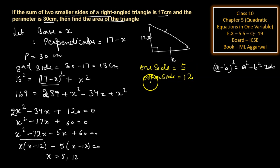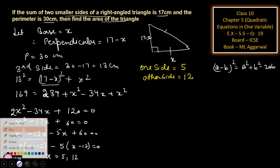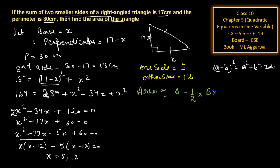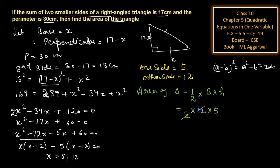Now we need to find the area of the triangle. Area of triangle equals half into base into height. The two legs are 12 and 5. So area equals half into 12 into 5, which is 30 centimeter square. So the area of the triangle is 30 centimeter square.